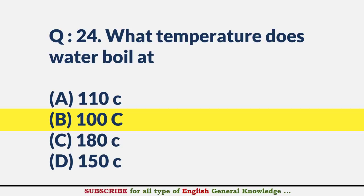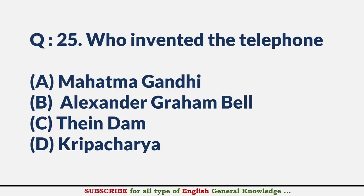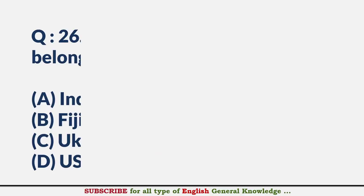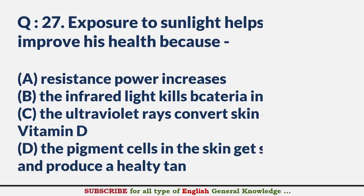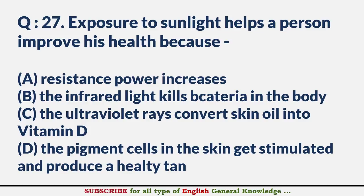Who invented the telephone? — Answer B: Alexander Graham Bell. Golf player Vijay Singh belongs to which country? — Answer B: Fiji. Exposure to sunlight helps a person improve his health because — Answer C: the ultraviolet rays convert skin oil into Vitamin D.